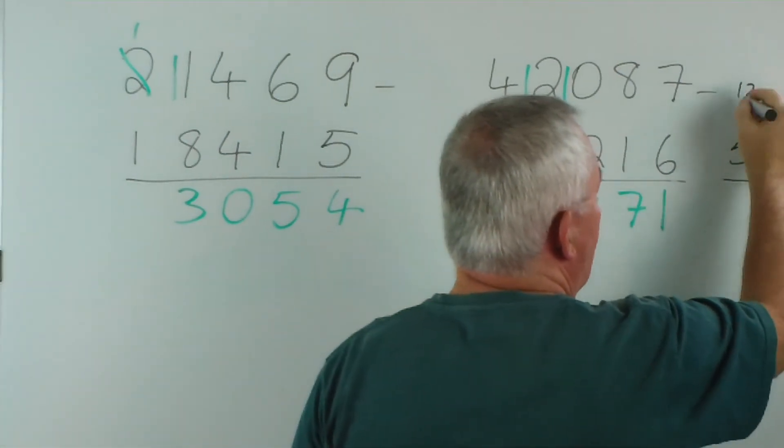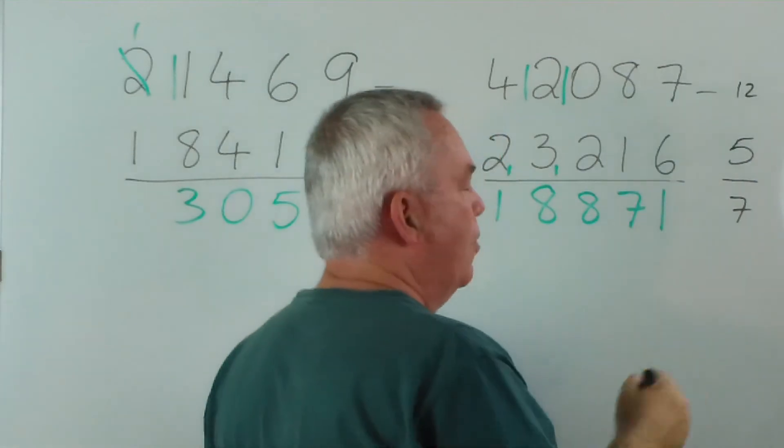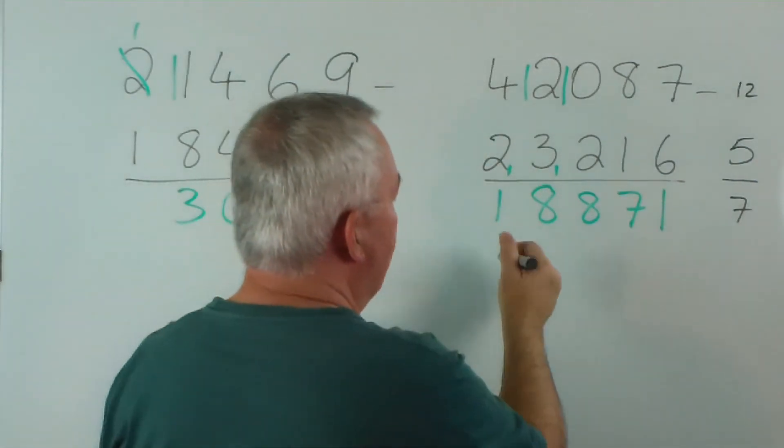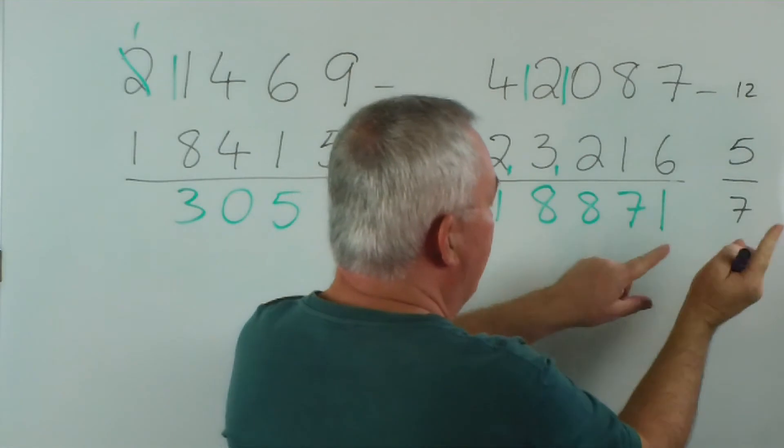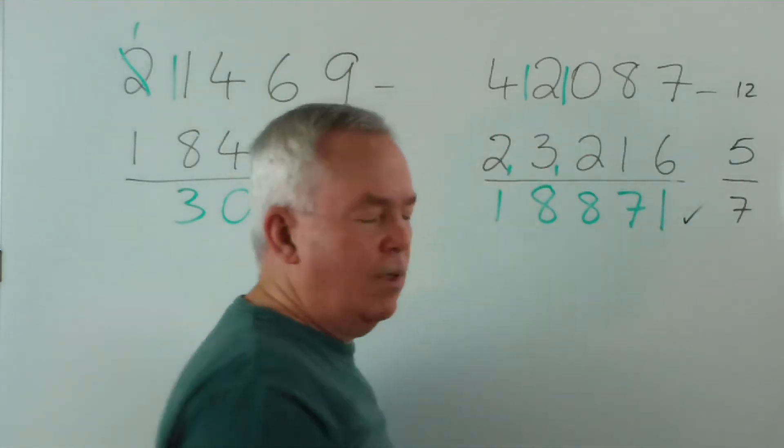But if I left that as a 12, 12 minus 5 is 7, so either way it works. This should be a 7. Look at this, 8 and 1 is 9, out they go, 8 and 1 is 9, leaves a 7. I'm confident that's right.